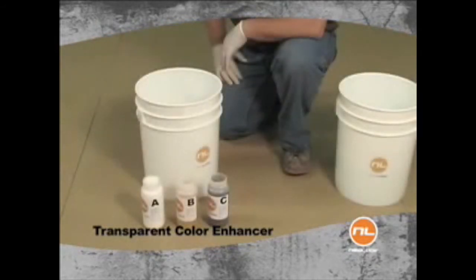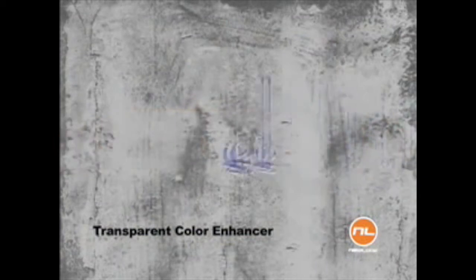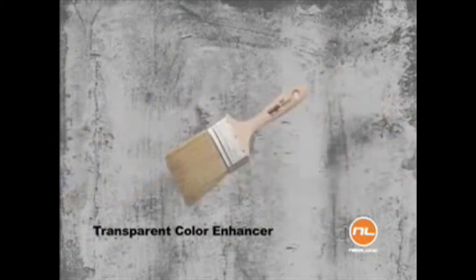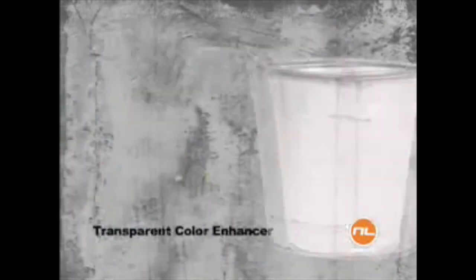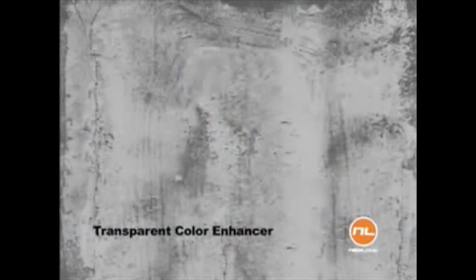The Color Enhancer Kit includes three parts: A, B, and C. Tools needed are Nulux applicator or pump sprayer, a mixer, broom handle, bristle brush, power drill, 48 ounces of water, and one bucket with at least a three gallon capacity.